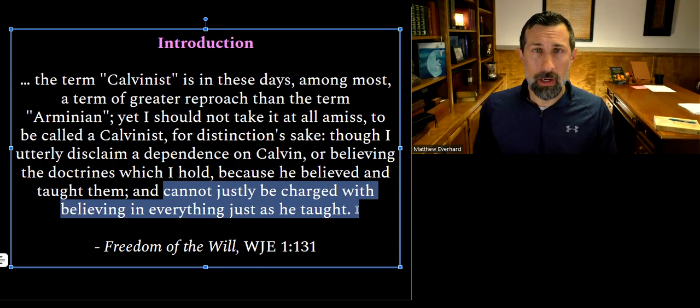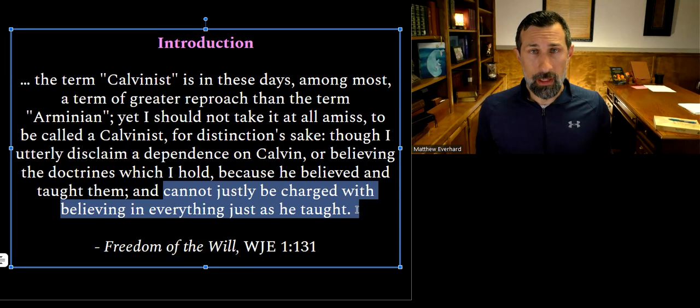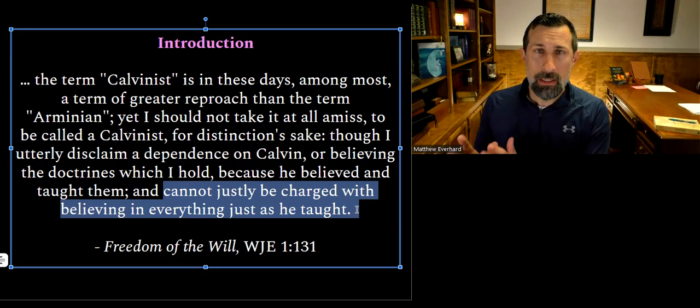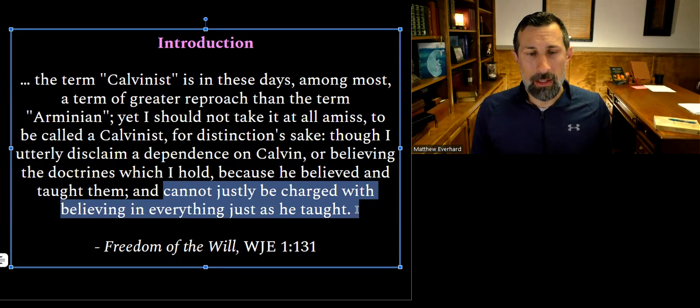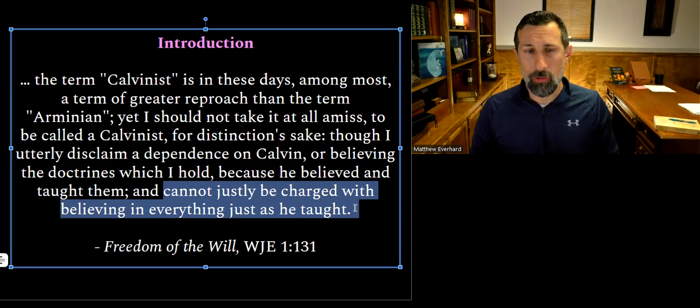So what did Edwards say here? A couple of pretty important things. First, if you want to categorize Jonathan Edwards, he says to categorize him as a Calvinist. Second, he says he does not build his works directly from John Calvin — in fact, it's hard to say he builds from any individual theologian. Edwards is very much a free thinker, though he stands largely in the mainstream of Reformed, Calvinist, and Protestant thought. He also indicates there are some things he doesn't agree with Calvin on — so their viewpoints are not completely synonymous.